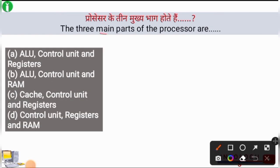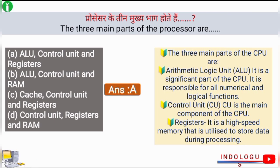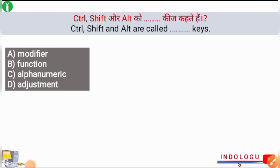Next question: The three main parts of the processor are? This is a very important question. The right answer is option A: ALU, control unit, and registers. ALU stands for Arithmetic Logical Unit and is the significant part of the CPU responsible for all numerical and logical functions. The control unit is the main component of the CPU. Registers are high-speed memory utilized to store data during processing. CPU is therefore regarded as the brain of the computer.